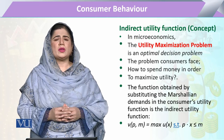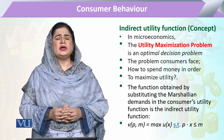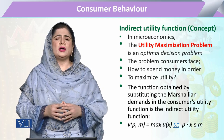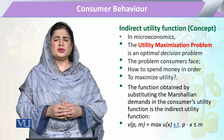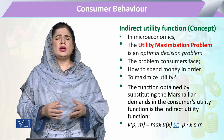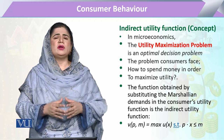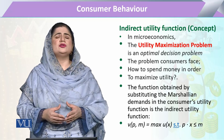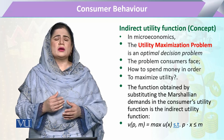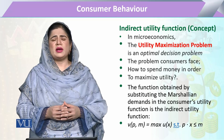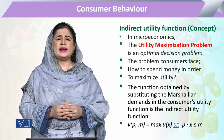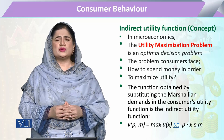Mostly when we deal with the utility maximizing approach, we use either the substitution method or the Lagrange method, and we keep the utility level constant. But in the indirect utility function, we are not assessing utility maximization through the utility approach; rather, we take the expenditure approach.